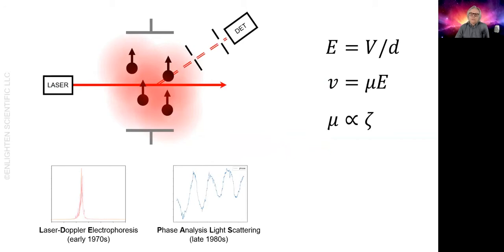Why would you want to do this? The laser Doppler method has a limitation as far as how much electrolyte you can have present in your sample. As you increase the electrolyte concentration, you start to see adverse effects like heating or bubble formation at the surfaces of the electrodes and other unwanted behavior that makes the measurement impossible using the laser Doppler method. Phase analysis gets around some of these limitations, but sacrifices the ability to show you the distribution.